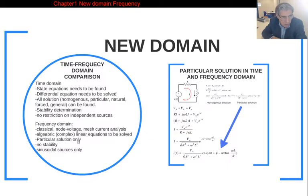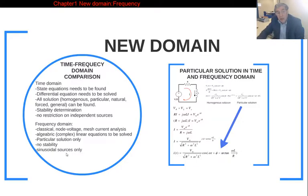We cannot examine the stability of the circuit in this domain, which is another disadvantage. There is also a restriction on independent sources in the frequency domain: only sinusoidal sources are used. For DC sources, there is no need to use this domain.